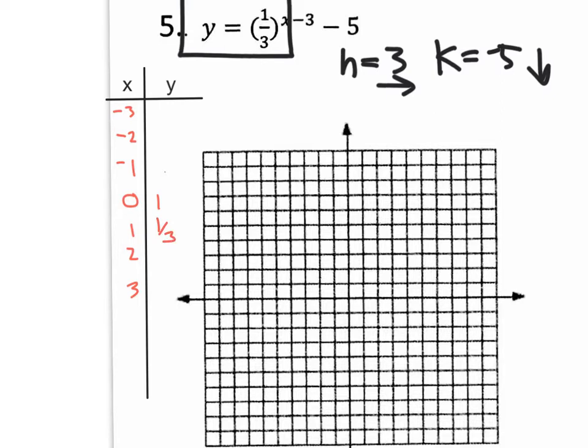If I take the output one-third and multiply it by one-third, I get one-ninth. If I take one-ninth and multiply it by one-third, I get one-twenty-seventh, which is hardly anything — as you can see, it's approaching zero. Now going backwards, doing the reciprocal of multiplying by one-third means multiplying by three. So it's really like multiplying by three each step going left.